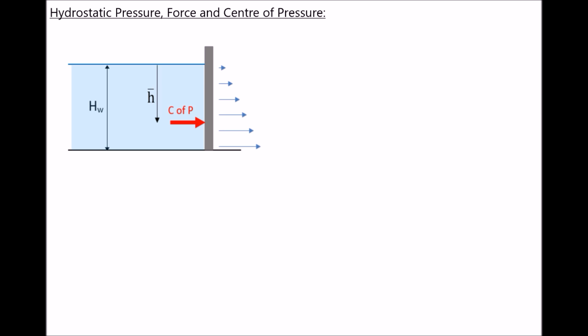In earlier tutorials we introduced the formula for hydrostatic pressure, where hydrostatic pressure equals density times gravity times height. So hydrostatic pressure is going to be higher when the density of the fluid is higher, and it's also going to be higher when we're at a greater depth below the free surface. Hydrostatic pressure is the pressure as a result of the effects of gravity on that liquid.